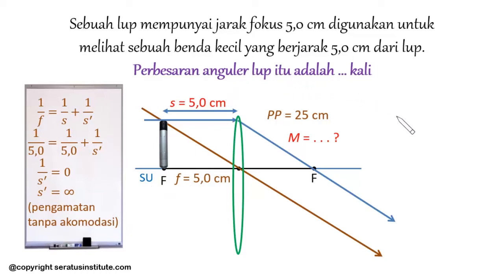We use the formula M equals near point of the eye divided by focal length. The near point of the eye is 25 cm, focal length is 5 cm. So we write M equals 25 divided by 5. What is 25 divided by 5? 25 divided by 5, the result is 5 times. This is the final answer.